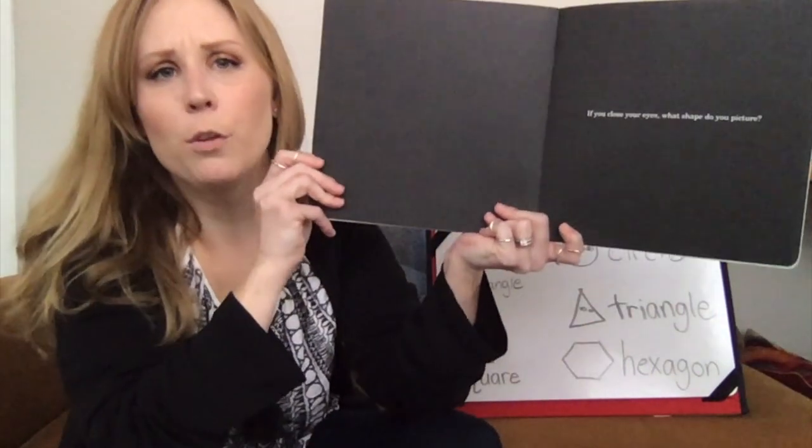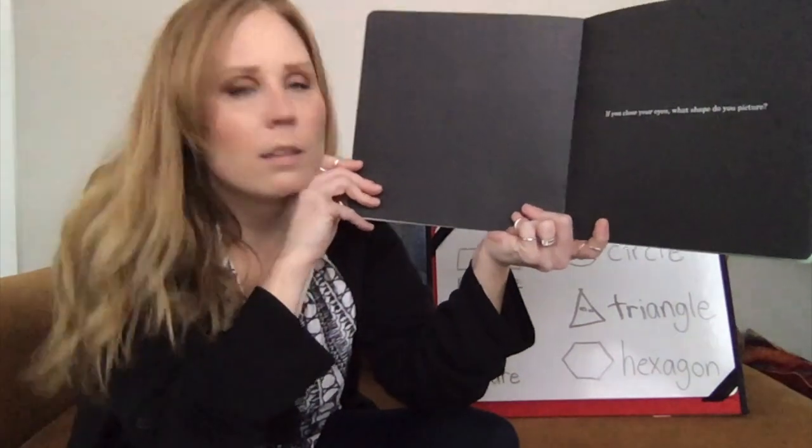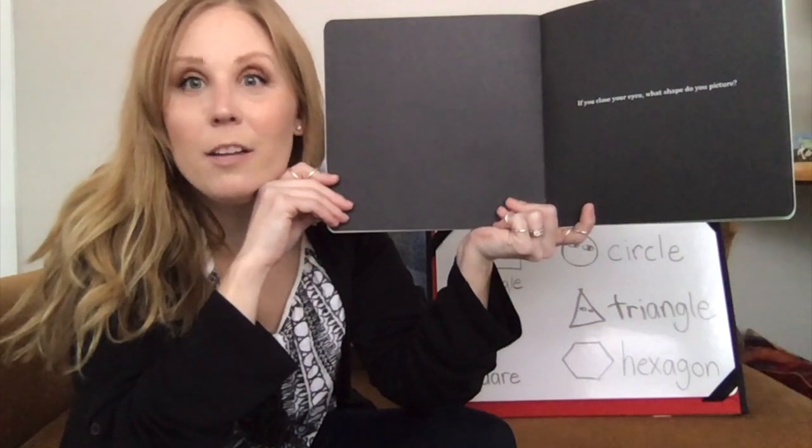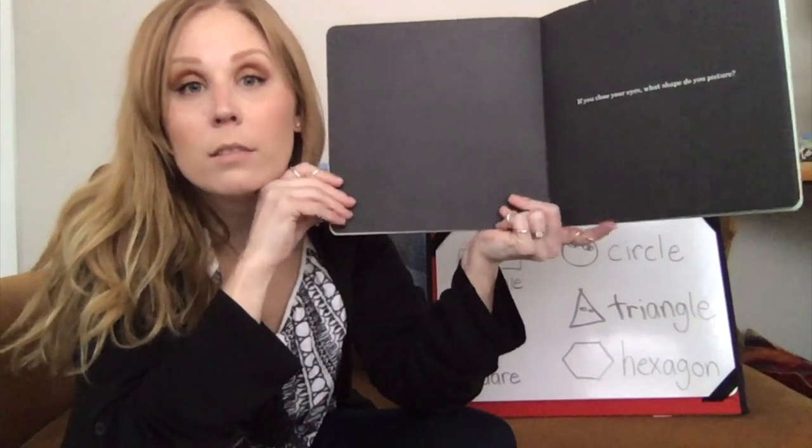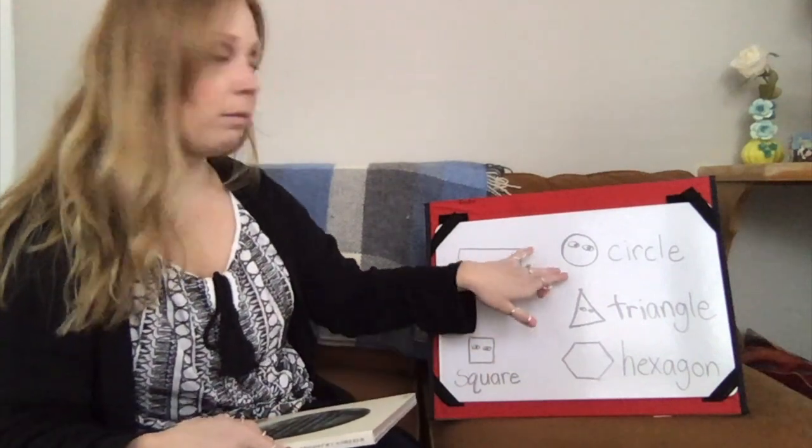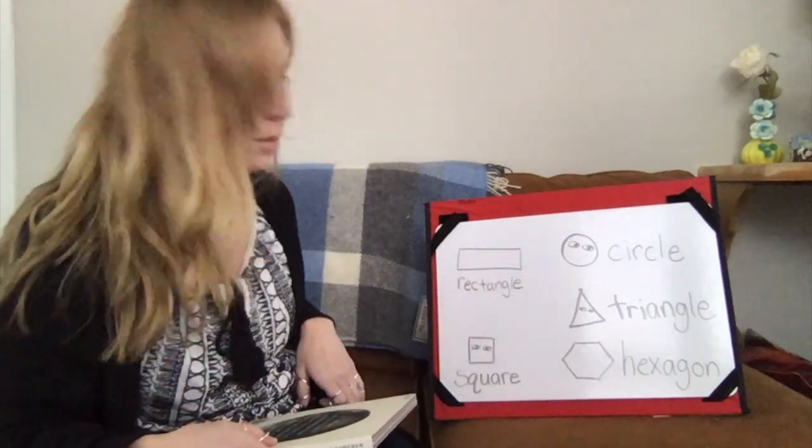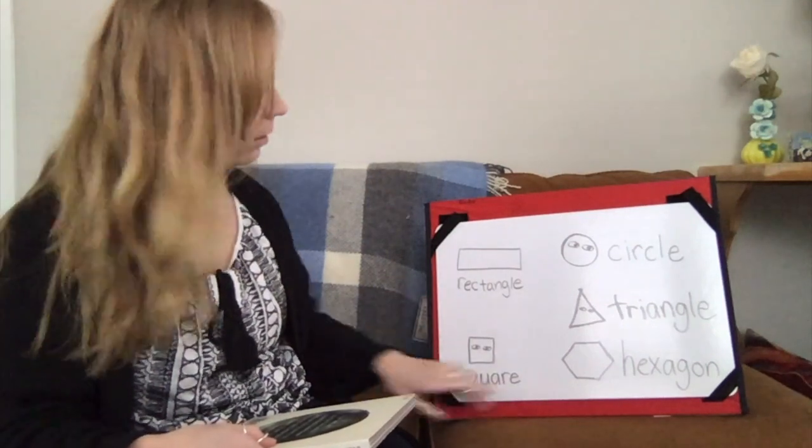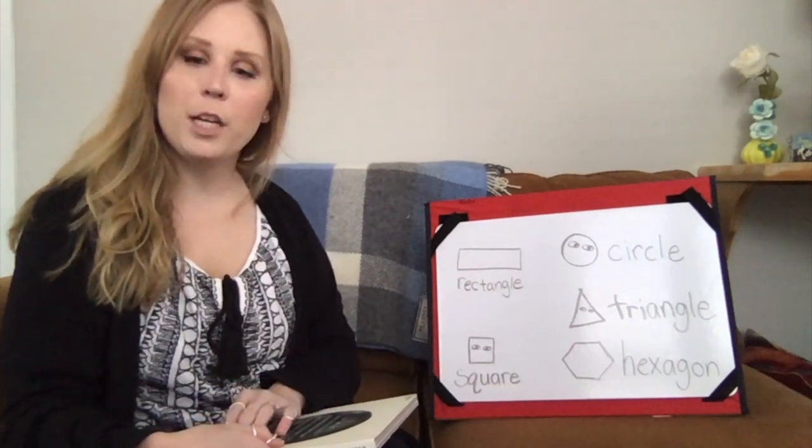So, if you close your eyes, what shape do you picture? What shape do you think was in the cave behind the waterfall? You know of a few. We know Circle, we know Triangle, we know Square. So it wasn't them. You learned about rectangle. You learned about hexagon. You might know some other shapes.